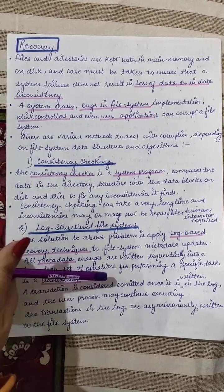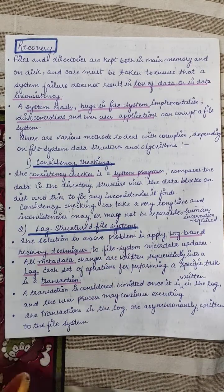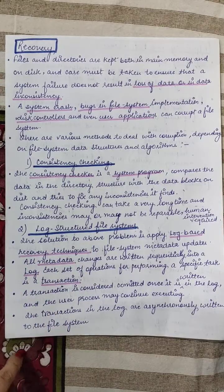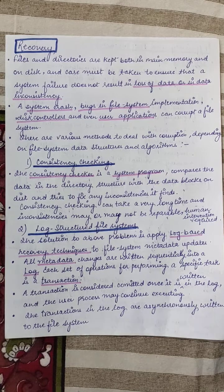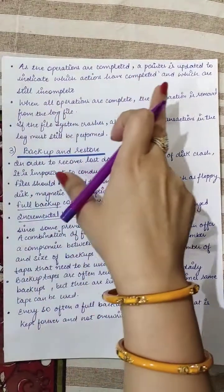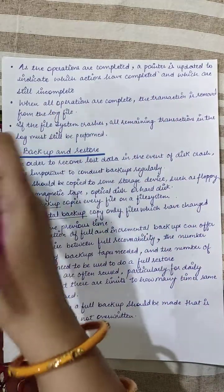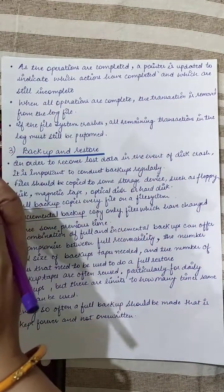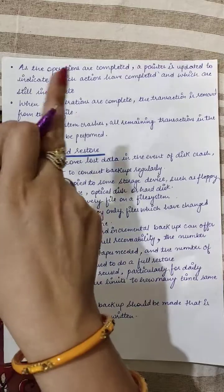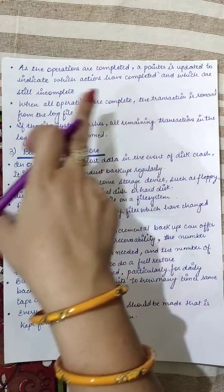A transaction is considered committed — that is, complete — once it is written into the log. The user process may continue executing other transactions. Transactions in the log are asynchronously written to the file system. As operations are completed, a pointer is updated to indicate which actions have completed and which are still incomplete.